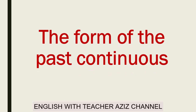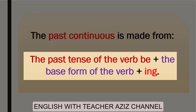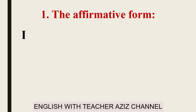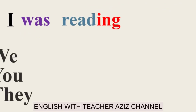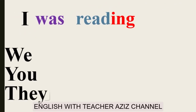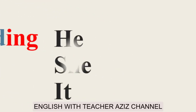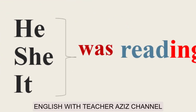The form of the past continuous. The past continuous is made from the past tense of verb to be, plus the base form of the verb, plus -ing. Affirmative form: I was reading. We, you, and they were reading. He, she, it was reading.